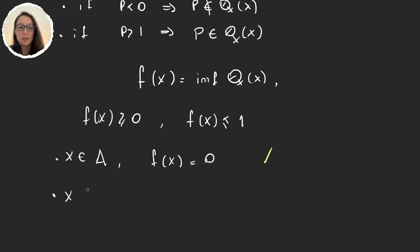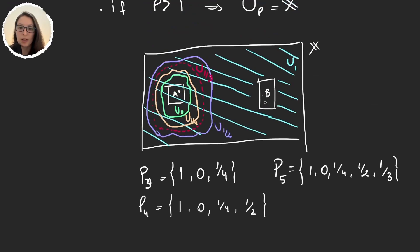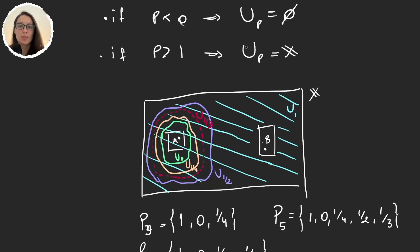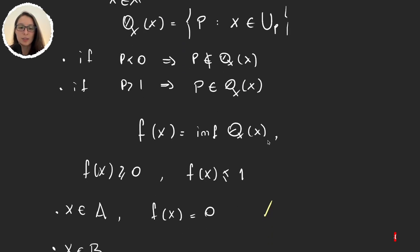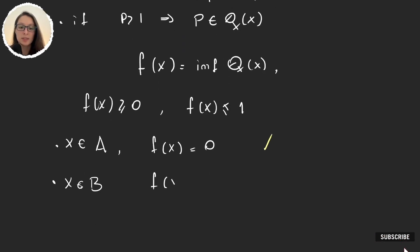Now if x is an element in B, the only time that we will be able to cover this element will be when we reach U_p equal to the entire space. And so x in B will be an element of U_p for every p greater than 1, and so the infimum will be 1. So f(x) for x in B has to be 1. Again, this is exactly what we wanted.